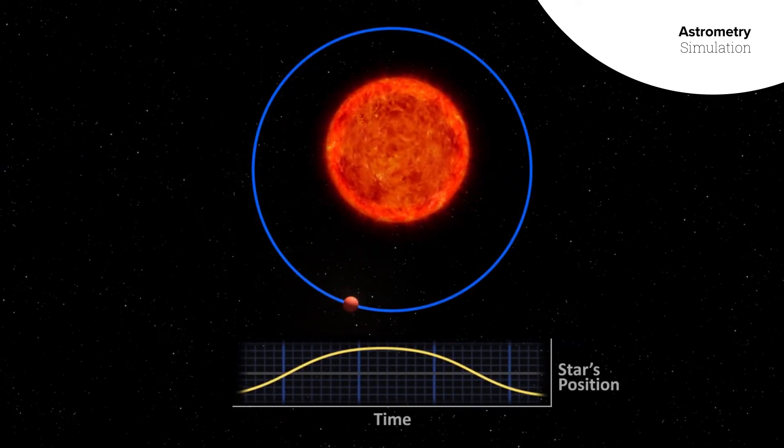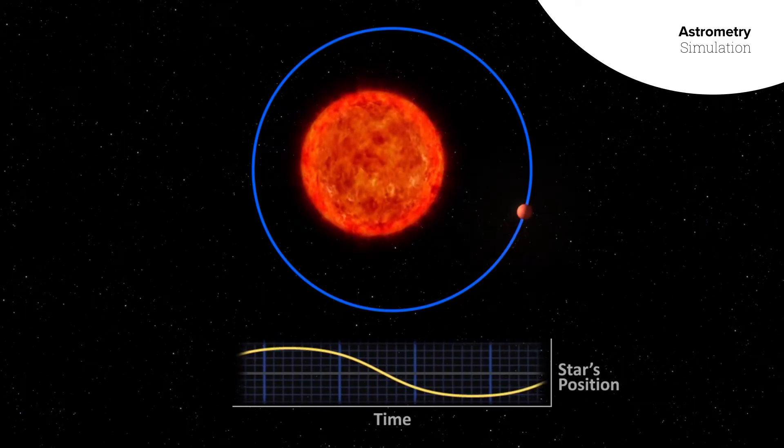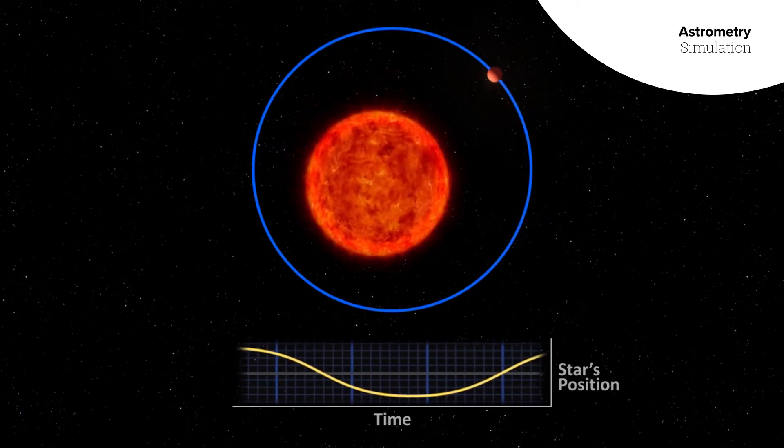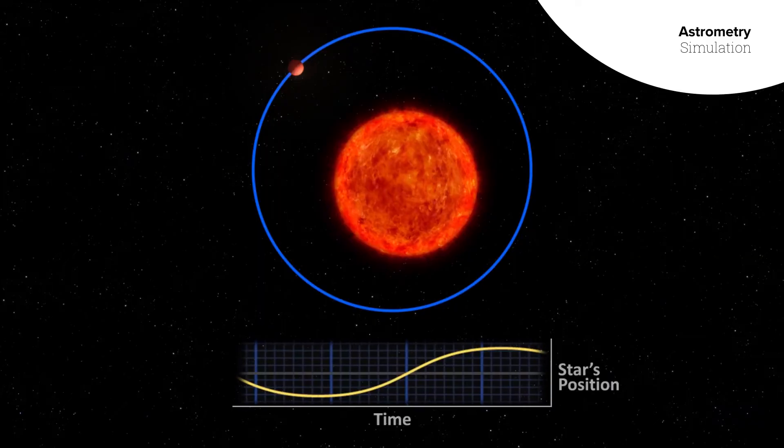Another technique observes very small changes in the star's position in the sky, the wobble that occurs when an unseen planet's gravity tugs on its host star.